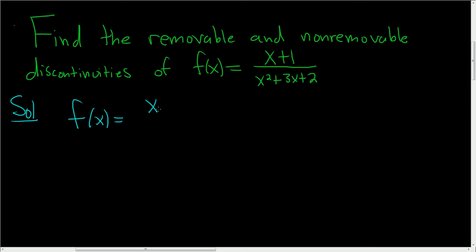So we have x plus 1, and in the denominator we need two numbers that multiply to 2 and add to 3, so 1 and 2. So x plus 1 and x plus 2.